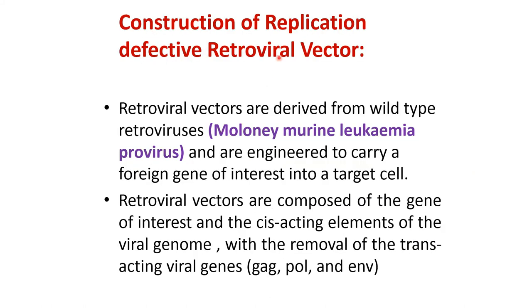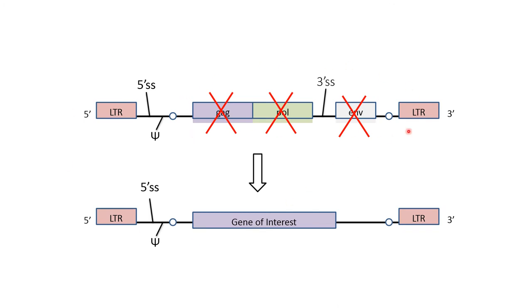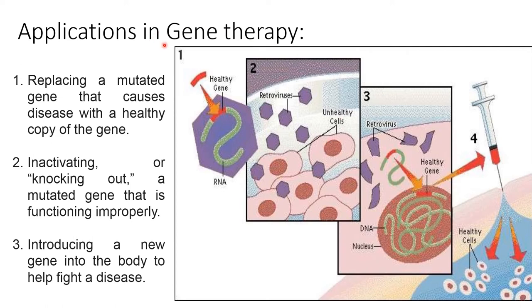For construction of replication-defective retroviral vectors: retroviral vectors are derived from wild-type retrovirus and engineered to carry a foreign gene of interest into the target cell. The retrovirus is composed of the gene of interest and cis-acting elements of the viral genome, with the trans-acting viral genes — gag, pol, and env — removed to construct the retroviral vector.